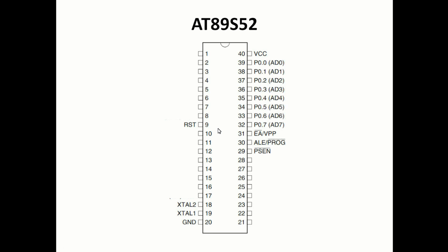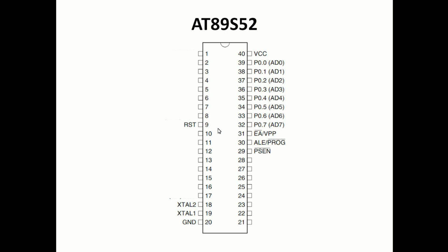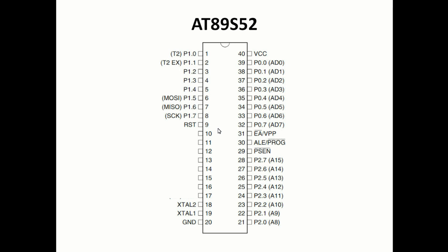Regarding the GPIO pins, Port 0 goes from pin 32 to 39, Port 1 from pin 1 to pin 8, Port 2 from pin 21 to 28, and Port 3 from pin 10 to pin 17. We have almost 32 GPIO pins which can be used as input or output pins, with all four ports each having 8 pins.